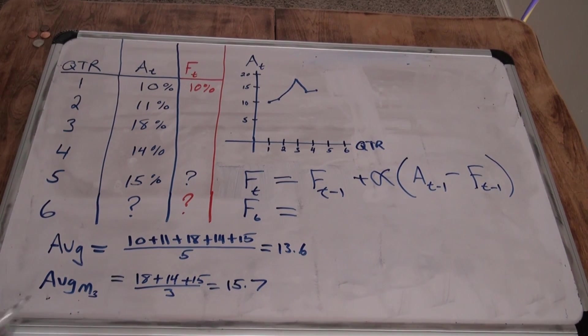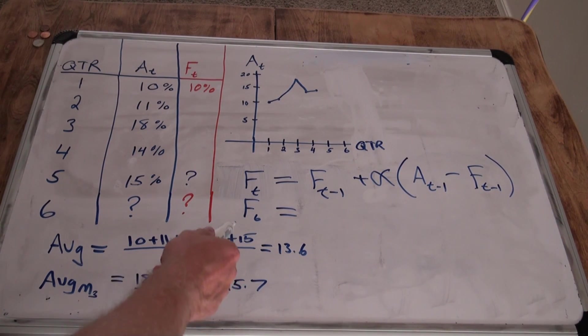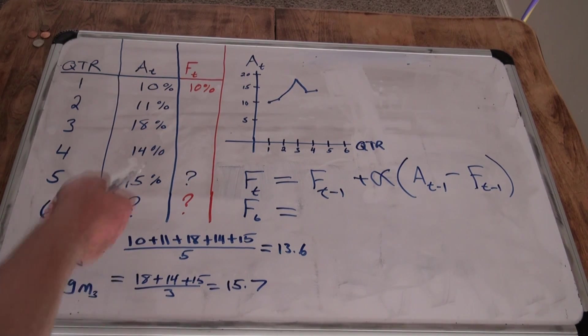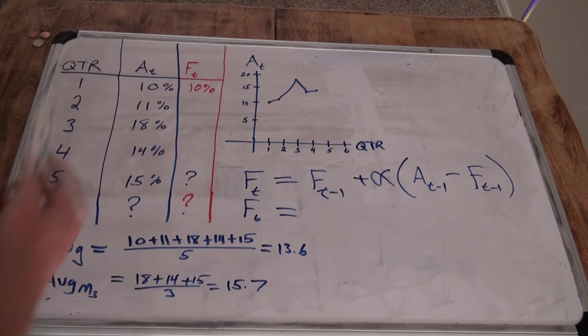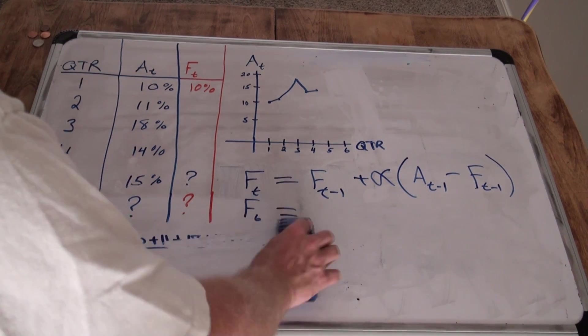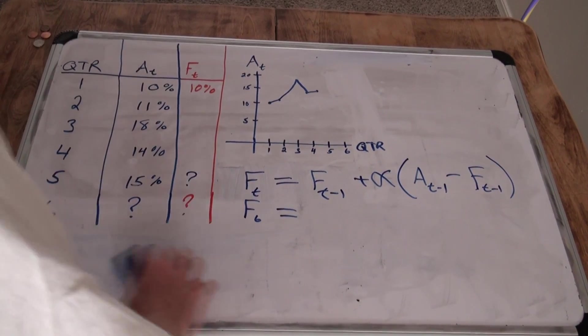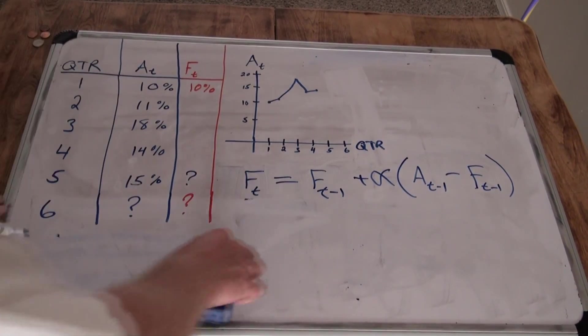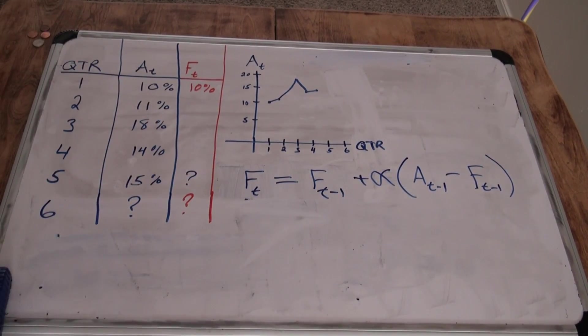So exponential smoothing, we can't figure out the sixth forecast without knowing the fifth. Well, we can't figure out the fifth without knowing the fourth, and so on and so on. So really, with exponential smoothing, you're going to need to figure out forecast two through six.